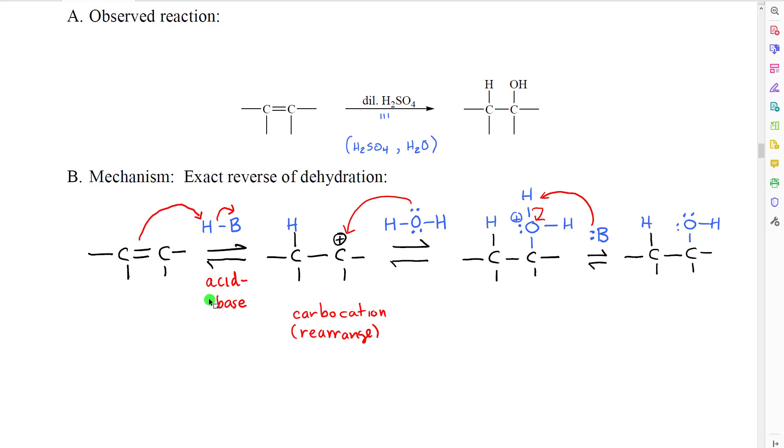This reaction actually follows a mechanism which is the exact reverse of a mechanism that we already learned, the mechanism of dehydration. If we look in our first step, the alkene, which has a high electron density in its double bond, is attracted to and reacts with the hydrogen of the acid.